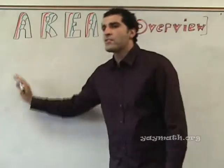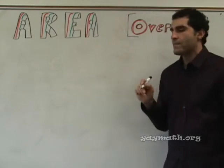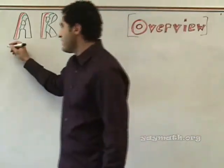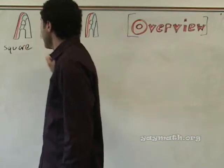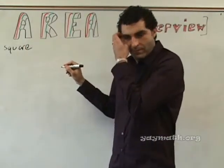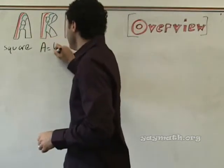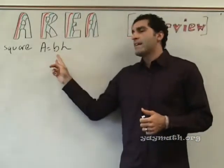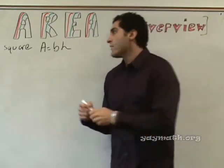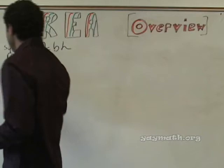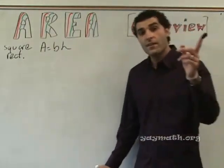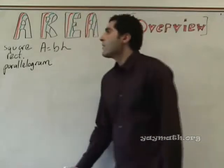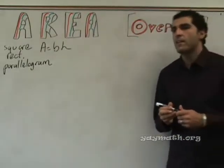Alright, so let's list a bunch of formulas for area of a bunch of shapes. Please give me a shape. Triangle! Square. And what is the formula for area of a square? Base times height. Very good. Area equals BH. Any other shapes where area is base times height? Rectangle. Parallelogram. Very good. Squares, rectangles, and parallelograms: area equals base times height.